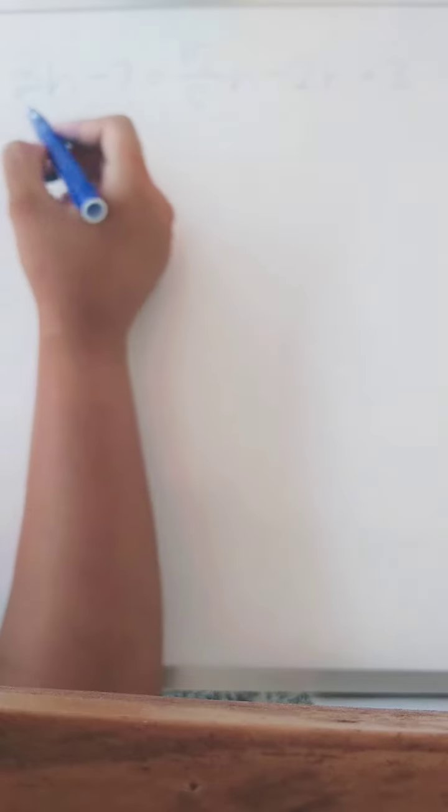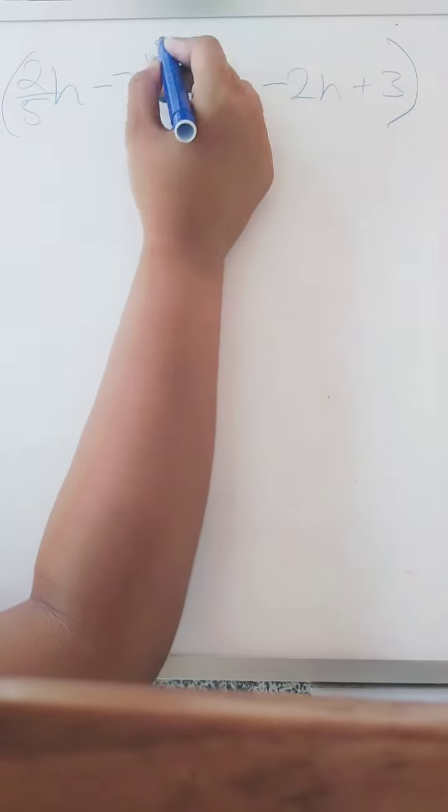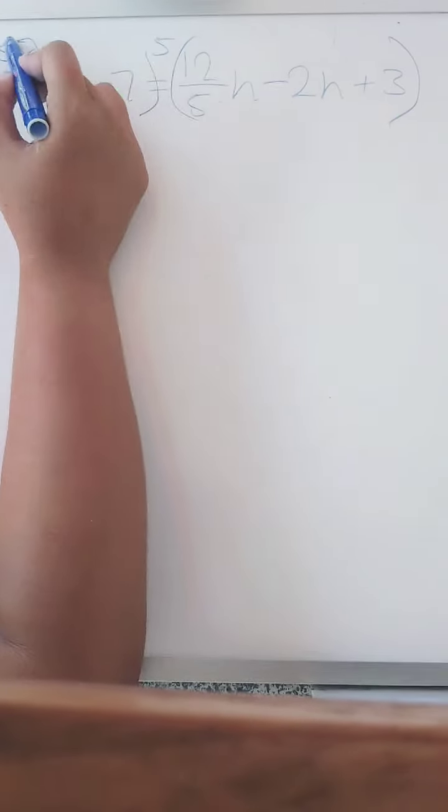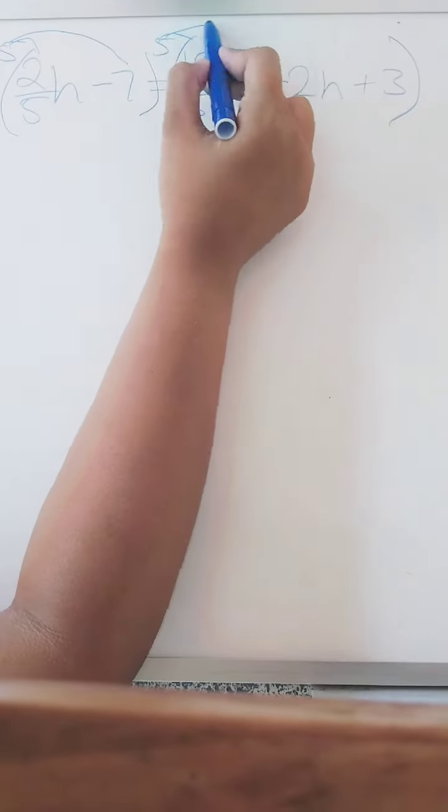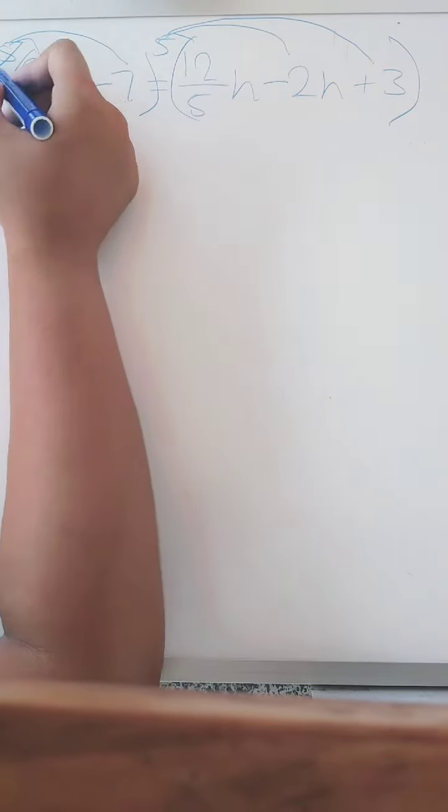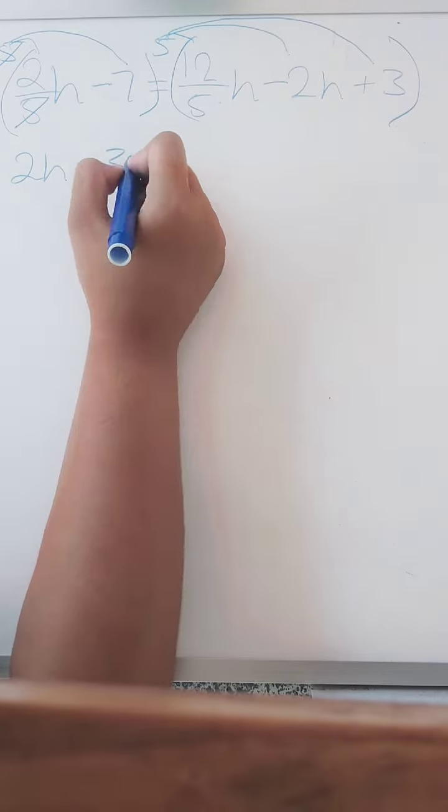Okay, first thing we have to do is get rid of the denominators by multiplying by their LCM on both sides. So you times 5 to the numbers that are in the parentheses, then we get 2H minus 35.